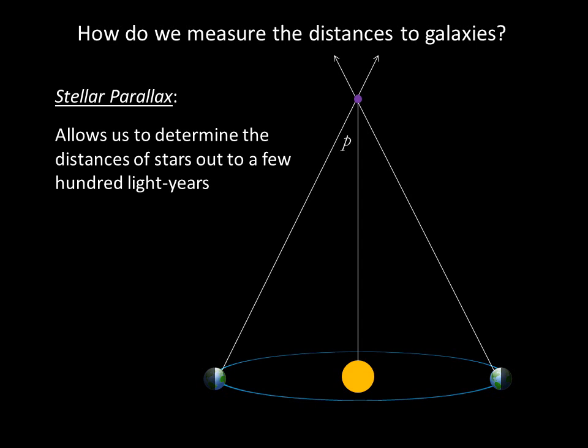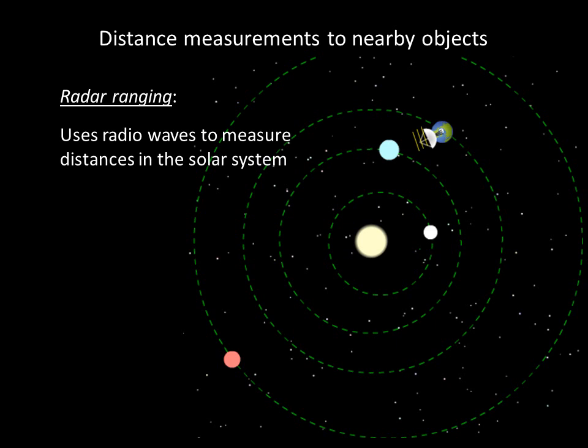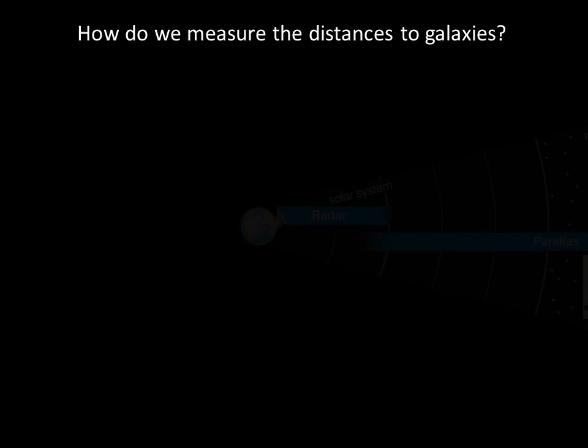We've already discussed using stellar parallax to measure distances to nearby stars. Measuring parallax requires the precise Sun-Earth distance — the astronomical unit. Astronomers measure the astronomical unit via radar ranging. In this method, radio waves are transmitted from the Earth and bounced off of Venus. The round-trip travel time allows us to calculate Venus' distance from Earth, and from that we can work out the length of an astronomical unit.